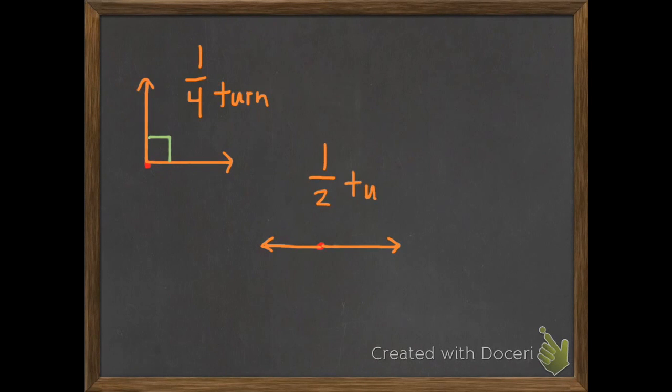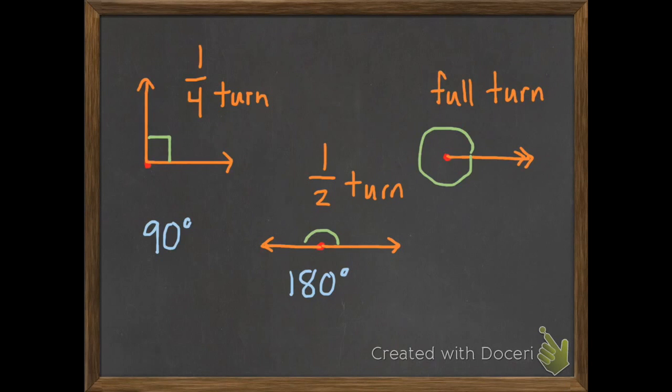When we have our half turn, it looks like that. And a full turn, it's going to look like that. It's important that we have this part that I put in green, so we know which direction we're counting. So that's our full turn. Once again, this would be 90 degrees, 180 degrees, and 360 degrees.